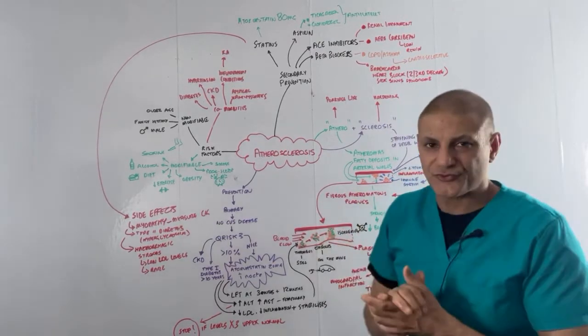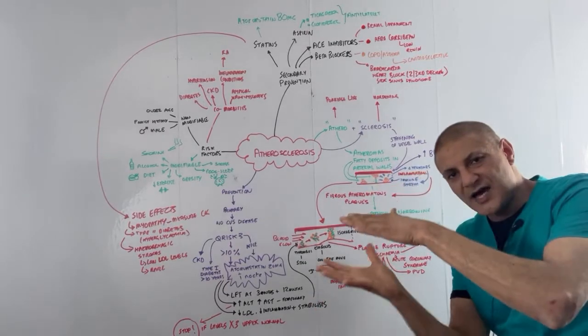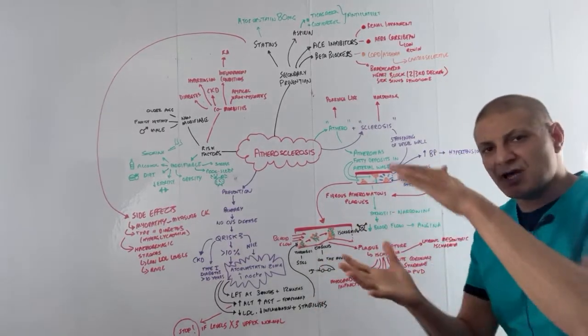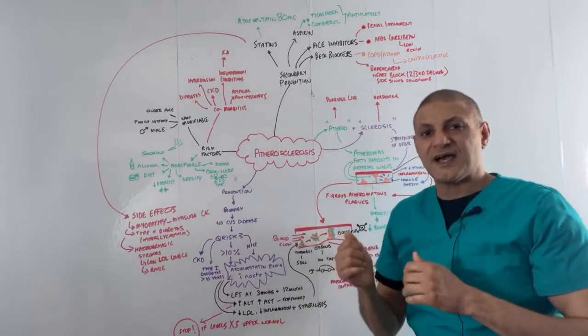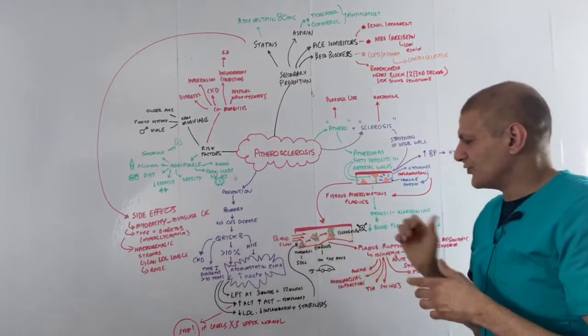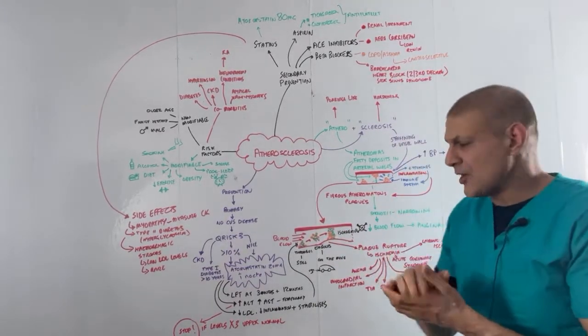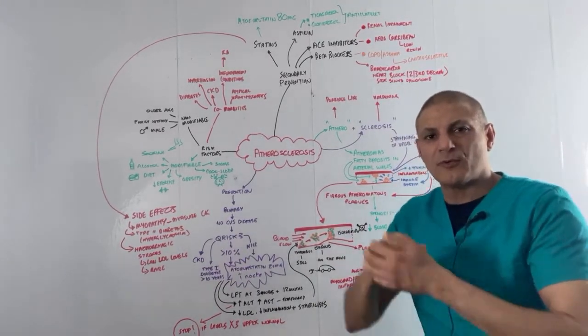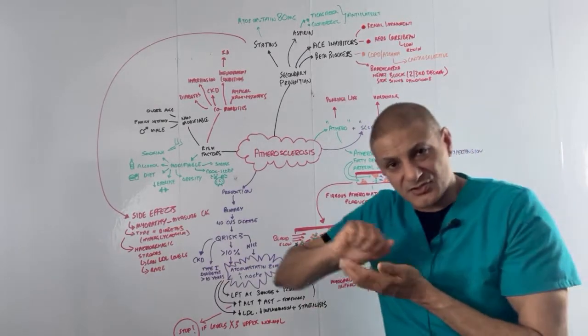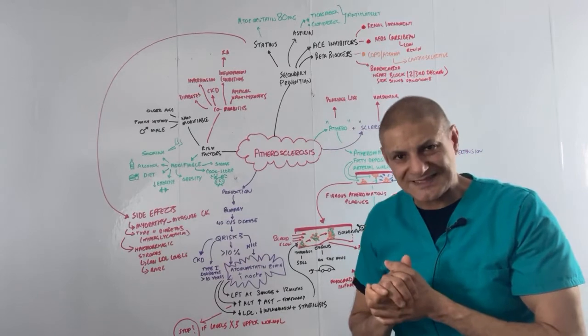So fibrin also joins the party. Now these plaques can narrow the vessel causing stenosis, reducing blood flow, causing angina. Let's look at this blood flow in more detail. When the plaque is stable, we have a thrombus. It's not going anywhere. When the plaque ruptures, we form an embolus. Now this embolus is on the move, and then it can actually block the vessels causing ischemia.